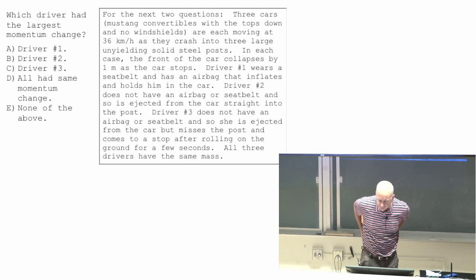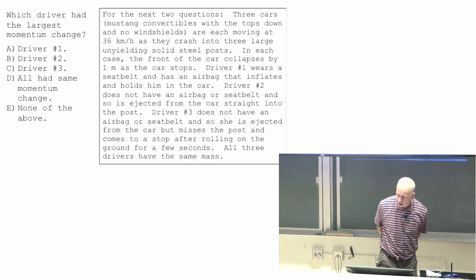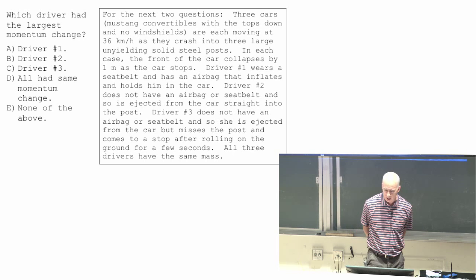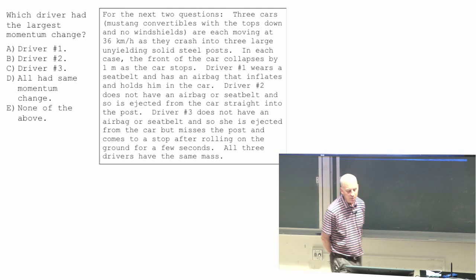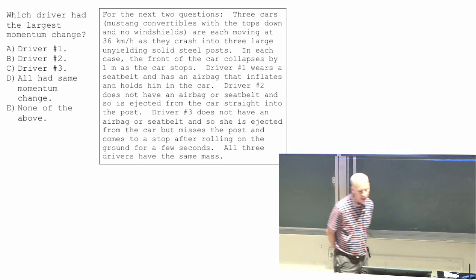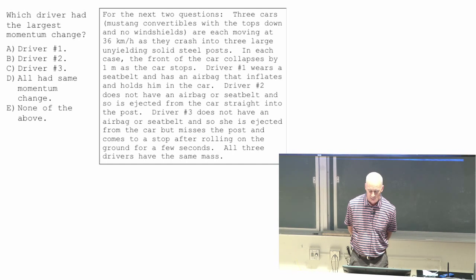So for the next two questions, three cars. They're all three Mustang convertibles with the tops down and no windshields. So you might think that unwise, but this is the way it is in this story. They're each moving at 36 kilometers per hour as they crash into three large unyielding steel posts.